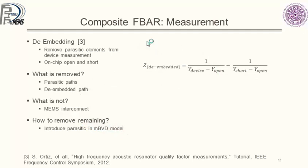Moving on to de-embedding: for high-frequency measurements, parasitics are important and will affect the device response. To extract the true device response we use an on-chip open and short. The de-embedding formula is Z_deembedded = 1/Y_device − Y_open − 1/(Y_short − Y_open), where the first term subtracts the open and the second term subtracts the short.